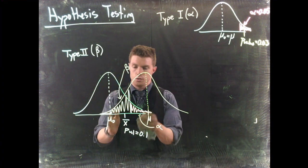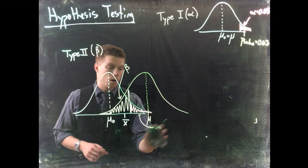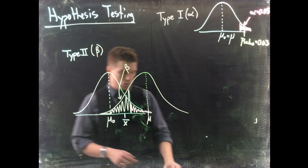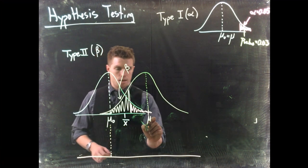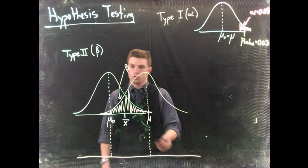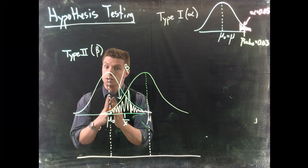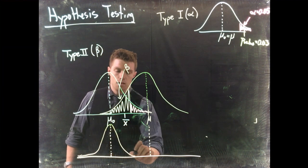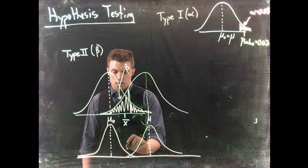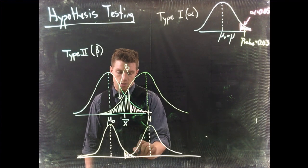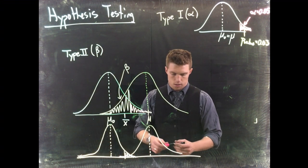We can do things to decrease beta. Keep the same distance between the hypothesized mean and the true mean, but really increase the sample size. When we increase the sample size, the sampling distribution gets narrower. So right below, drawing another distribution with the same mu values — with a large sample the distributions look much narrower, and alpha is still there but beta becomes tiny, very very small.